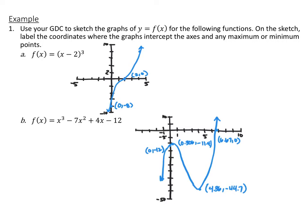For the next one, f(x) = x³ - 7x² + 4x - 12. I plugged it into the graphing calculator and used the minimum, maximum, zero, and value functions. The y-intercept is at (0, -12). The local maximum turning point is at (0.306, -11.4), and then it turns around again at the local minimum (4.36, -44.7). It crosses the x-axis at an x-intercept of (6.67, 0).